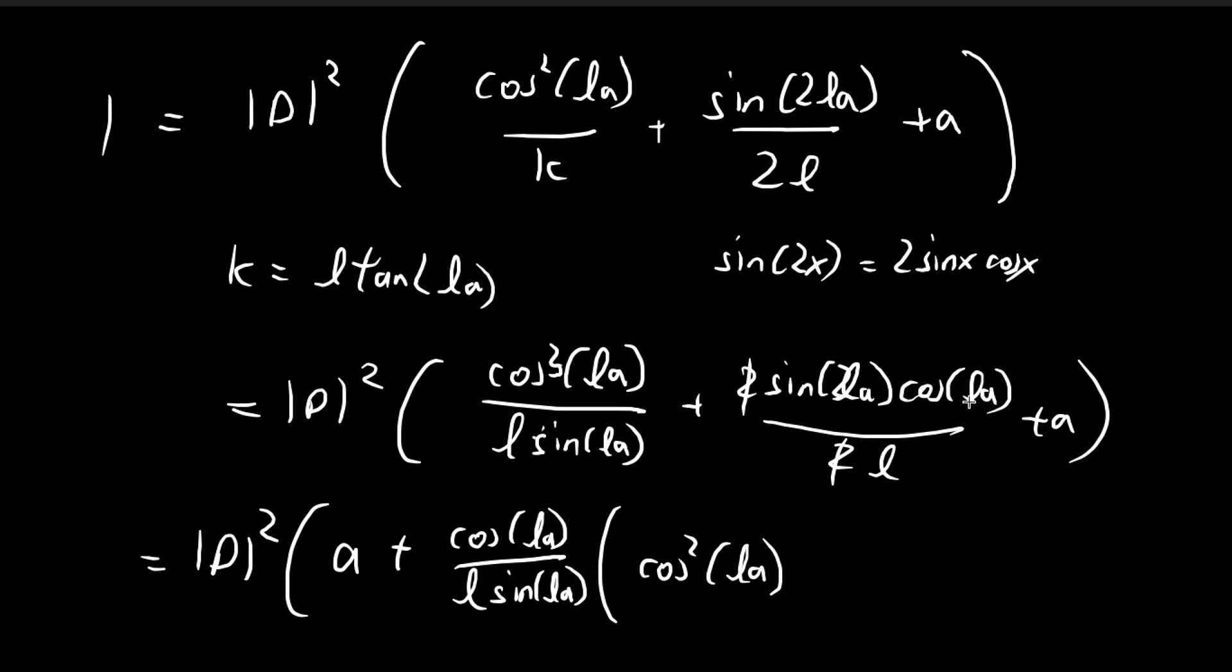And for this term, we've pulled out a cosine l a, and then we've pulled out a sine l a in the denominator. So we need to multiply an extra sine l a in the numerator, which gives us sine squared l a. And of course, sine squared plus cosine squared is just equal to 1, so we can ignore this term.